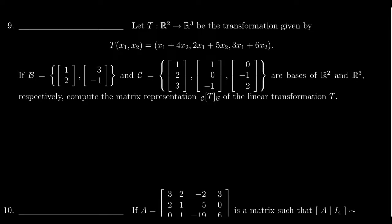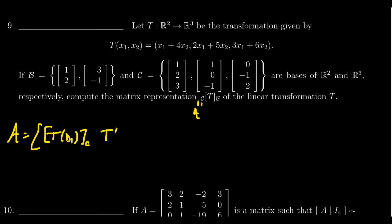Recall that for this matrix A, the formula requires us to compute the image of b1 and express it in C coordinates, then compute the image of b2 and also express it in C coordinates. If basis B were larger, we would keep going, but two columns are sufficient here. So we need to find the C coordinates for T(b1) and T(b2).